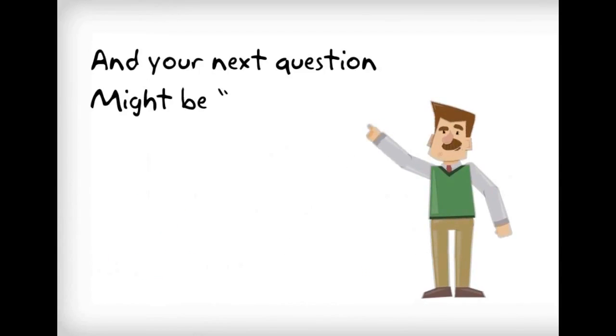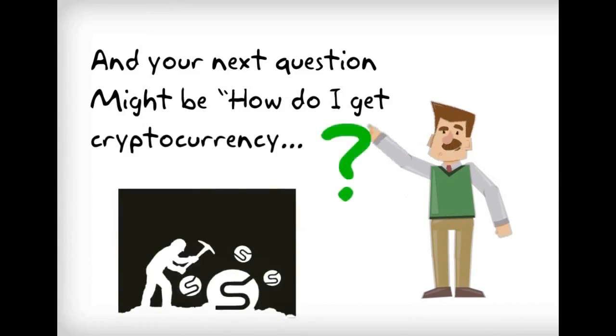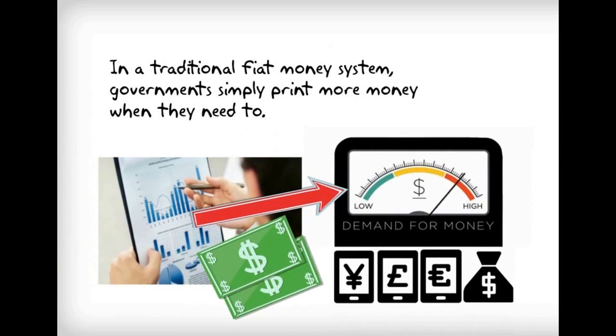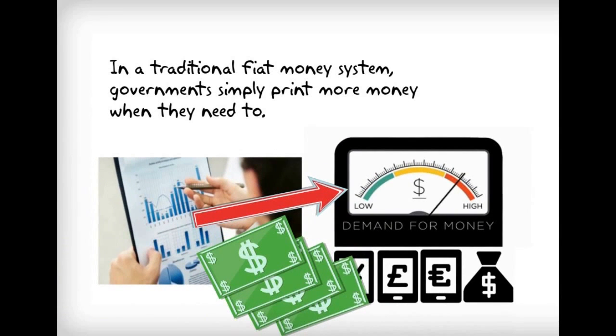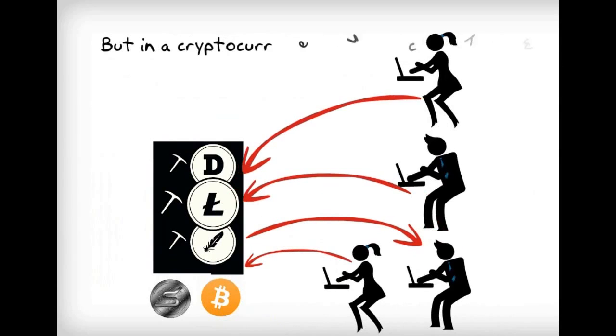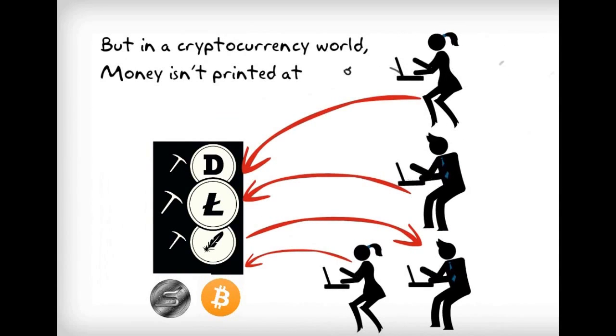Your next question might be, how do I get cryptocurrency? In a traditional fiat money system, governments simply print more money when they need to. But in a cryptocurrency world, money isn't printed at all. It is mined.